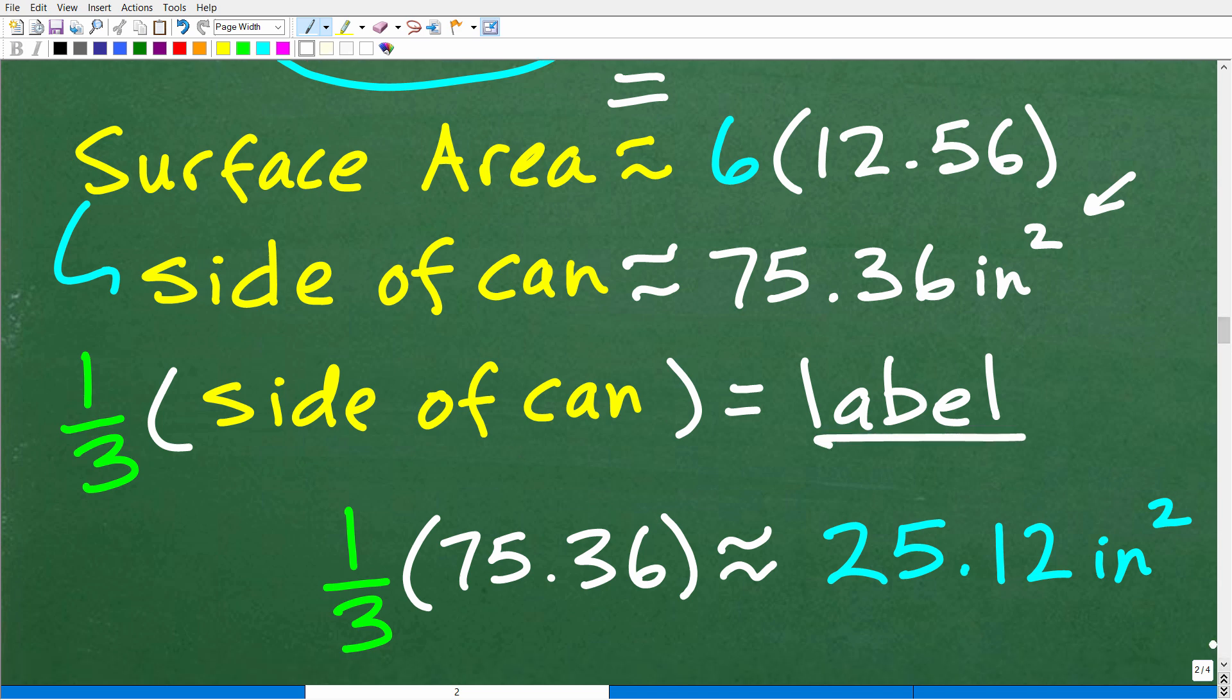So one third of this, or our side of the can, which is 75.36, one third of that. We'll just take this divide by three and we'll get 25.12 inches squared approximately.